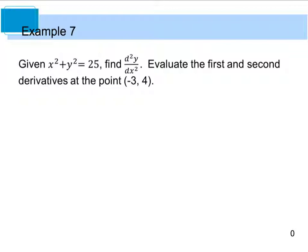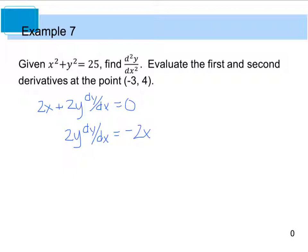For the first derivative, we're going to differentiate and get 2x plus 2y times dy/dx equals 0, because the derivative of the constant is 0. When we isolate dy/dx, we get 2y dy/dx equals negative 2x. Dividing everything by 2y, we get dy/dx equals negative 2x divided by 2y, which simplifies to negative x divided by y. This gives us our first derivative.